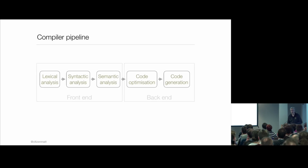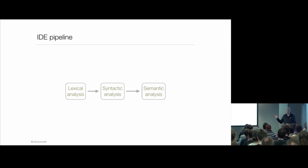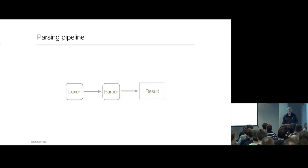Fortunately, somebody's already done this for us. We can look at the archetypal parser: the compiler. The compiler is split into a front end and a back end. The front end does the actual parsing; the back end generates code. The front end maps nicely to what we want in the IDE too. It splits into three things: lexical analysis, syntactic analysis, and then semantic analysis. In other words, a lexer, a parser, and a result — in my case, semantic analysis.